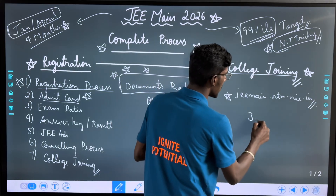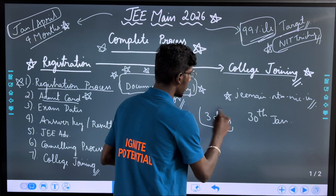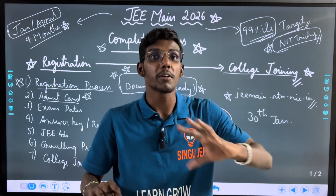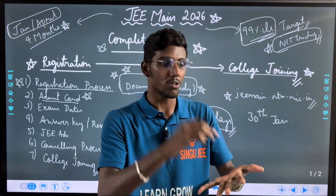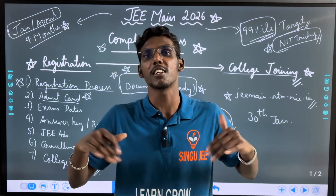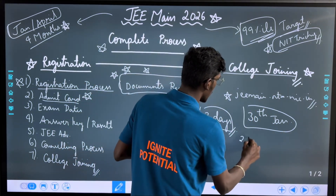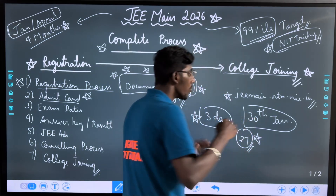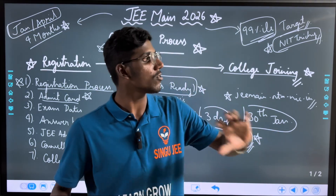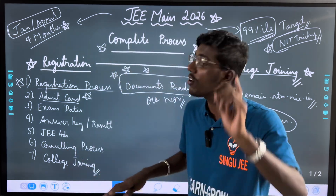Suppose you have the exam date on 30th January. Then 3 days before the exam date, you will be getting the admit card. If you have the admit card, you can see your exam center, like your photo. There are many details for you — you have a photo, you have the thumb impression. Then download it. The center address, to get the email address, you can download it. Like once on 30th January, on the 27th, you can get your admit card released.